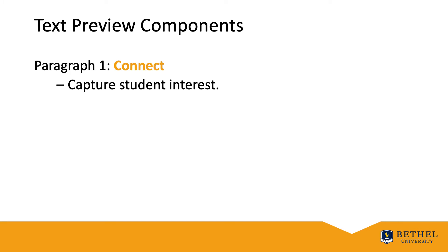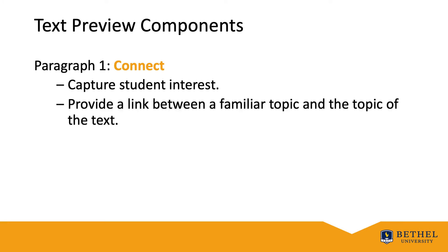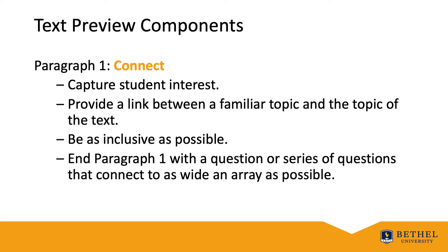Text previews consist of three paragraphs. Paragraph one is designed to capture the reader's interest and provide a link between a familiar topic and the topic of the text. We want to be as inclusive as possible — casting a broad net — using rhetorical questions designed to create interest and connect something familiar to the upcoming selection. We end paragraph one, the connect paragraph, with a single question designed to elicit four to six brief student responses that you make public and move on.